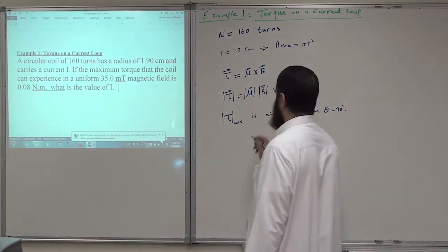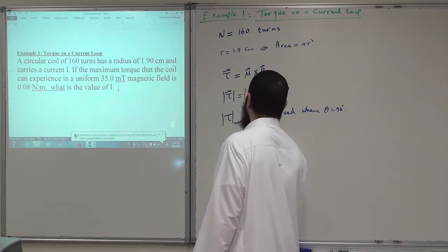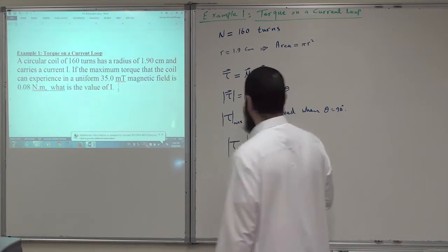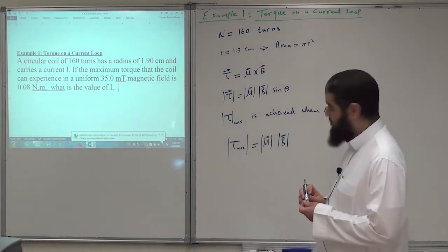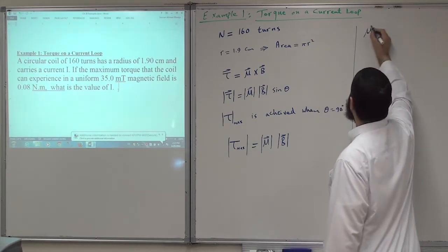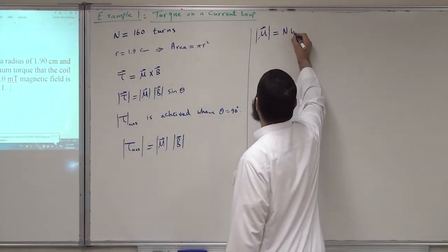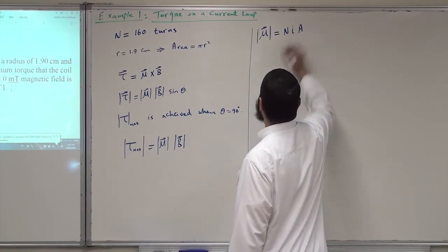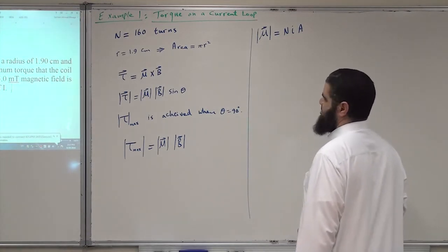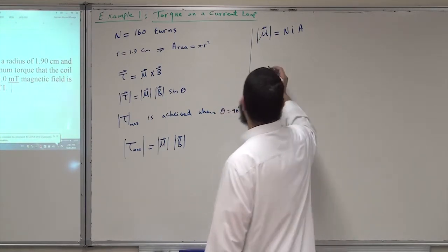So the maximum torque magnitude equals μ·B. The magnetic dipole moment μ equals N times I times A, where N is the number of turns, I is the current, and A is the cross-sectional area. B is given, so everything is known except the current.